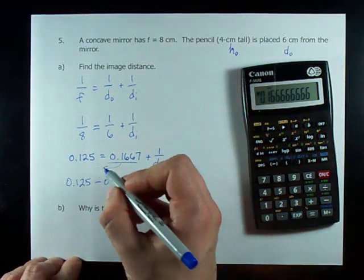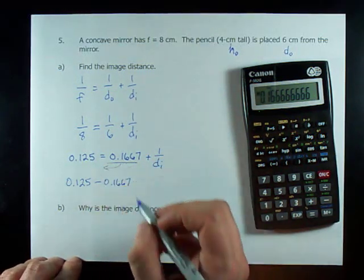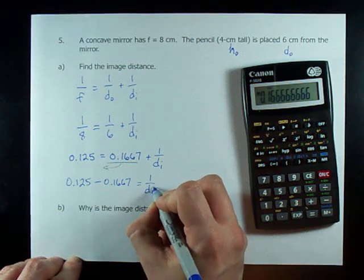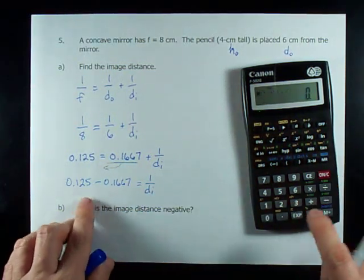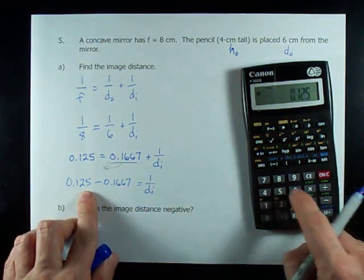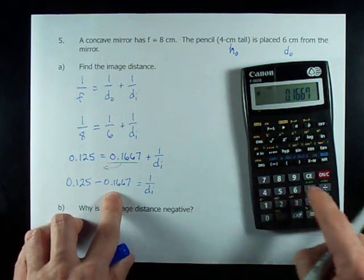Notice I flipped the side and I flipped the sign. I'm subtracting it. Now, I'm going to do that on the calculator. 0.125 minus 0.1667.